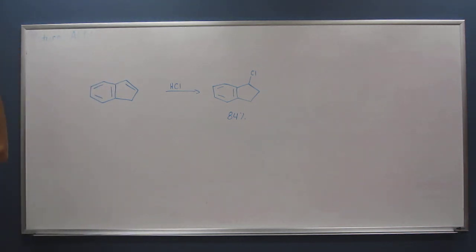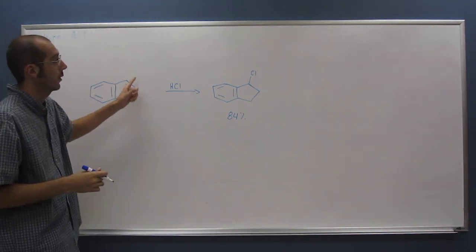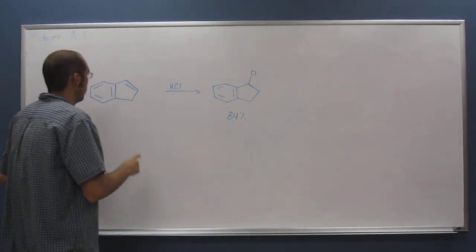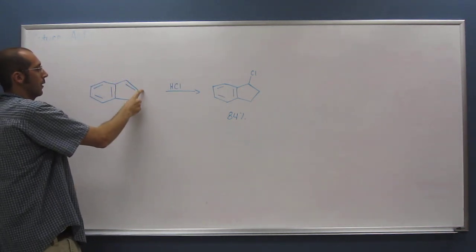So why is that? Why does it go, that chlorine on? And of course, this is going to be both enantiomers of that. But why does the chlorine only go there and not go there?